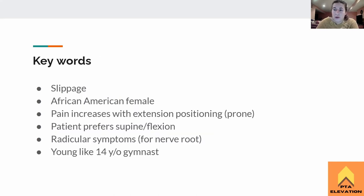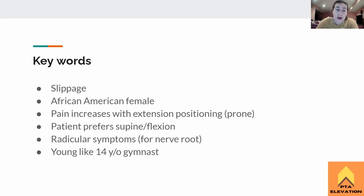Key words to think about for spondylolisthesis: slippage — the vertebrae is slipping forward, also called anterior translation of the vertebrae. Think African-American female, since it's more common in women and more common in African-Americans. Kind of like how adhesive capsulitis is more common in women in general.